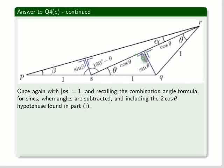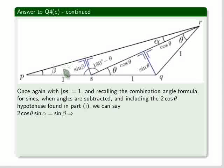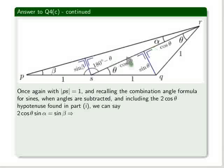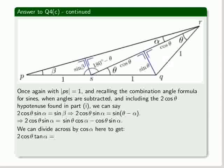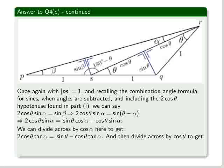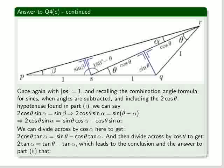Once again, we have here that PS is equal to 1, and recalling the combination angle formula for sines, when angles are subtracted, and including the 2 cos theta hypotenuse found in part 1, so this here is the hypotenuse to this triangle, we can say that 2 cos theta sin alpha is equal to sin beta. So this angle, or this line here, is equal to the sin of beta, and also to the hypotenuse times the sin of alpha. So we get that 2 cos theta times sin alpha equals sin of theta minus alpha. So we can start simplifying there, and divide across by cosine alpha to get twice cos theta times tan alpha is equal to sin theta minus cos theta by tan alpha. And we can divide once again by cos theta, and we get twice tan alpha equals tan theta minus tan alpha, which leads to the conclusion that the answer, and the answer to part 2, is that 3 tan alpha equals tan theta.